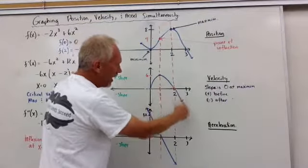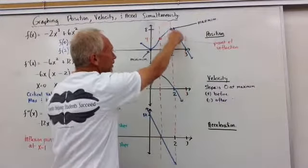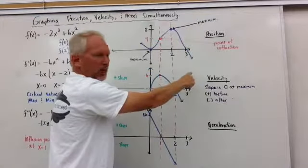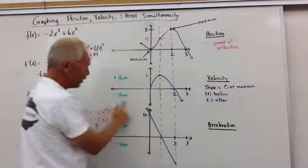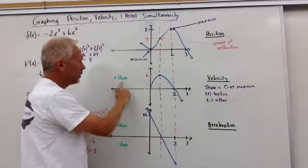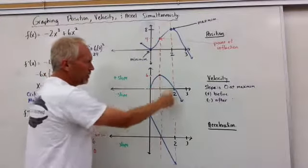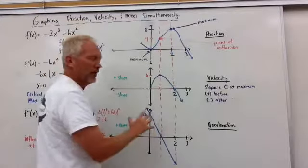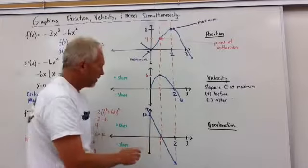So, and again, now once we get past 2, the derivative, or the slope of the line, is negative. And this is where the slope is negative. Slope is positive up here. Slope is negative down there. So, it works.